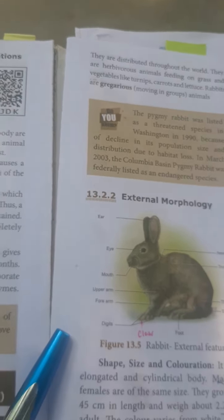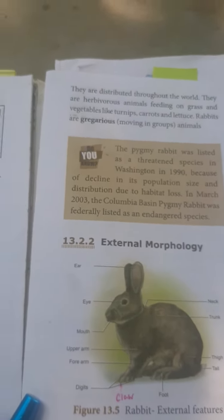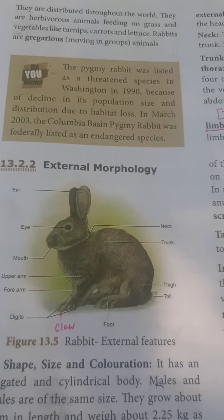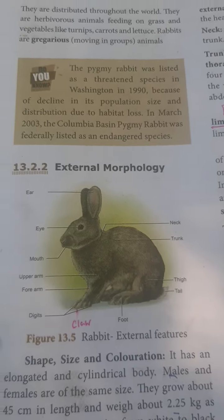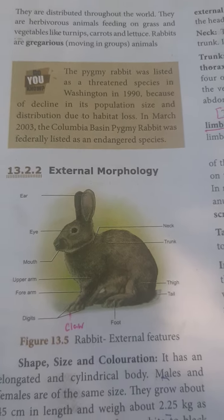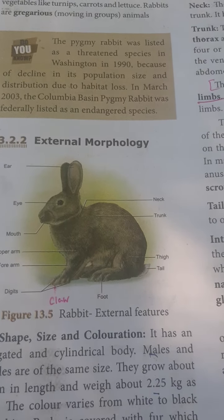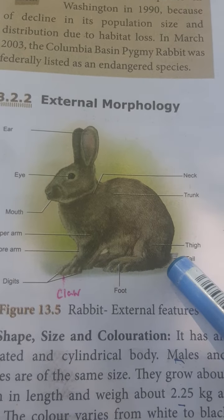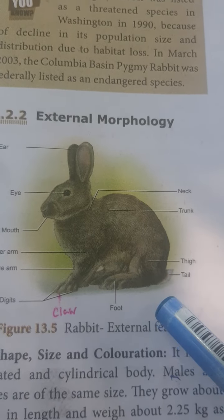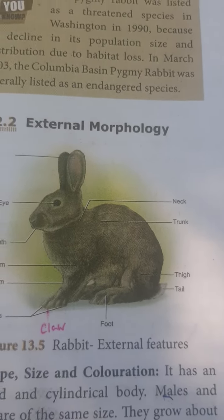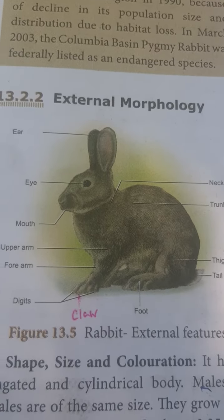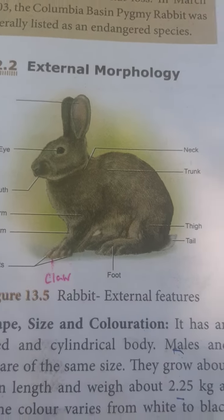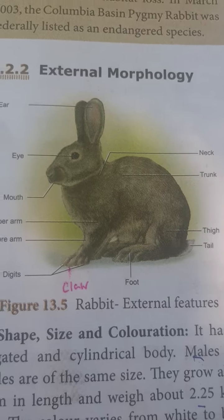The tail is used for signals. When rabbits sense danger, they signal using their tail. When we imitate the signal, other rabbits are also alerted to that danger. So to summarize, we covered invertebrate leech and vertebrate rabbit as examples of structural organization of animals.